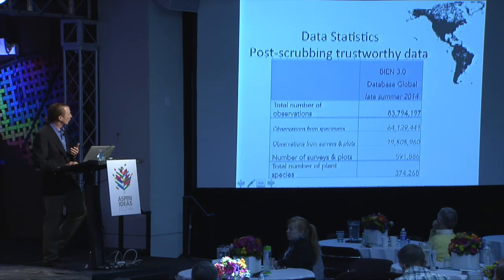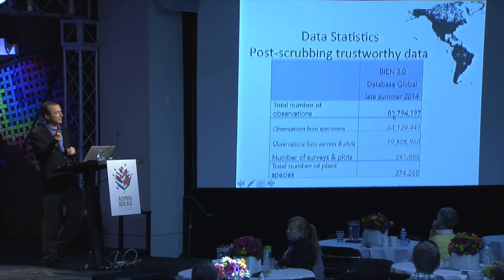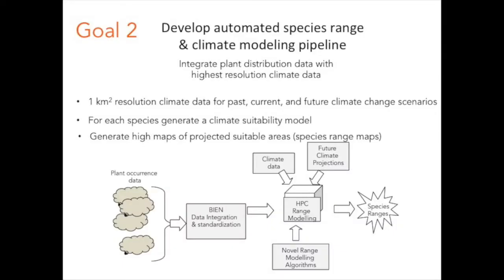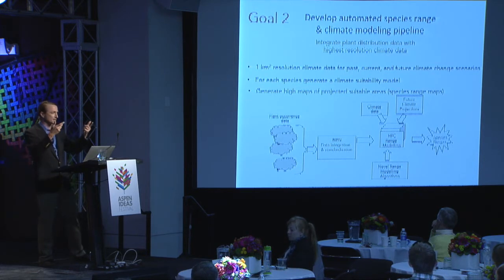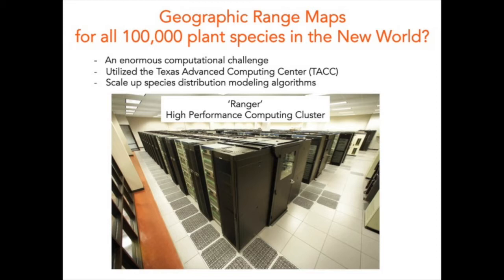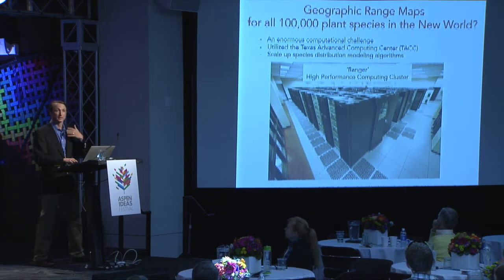As of right now, we've been able to put together and standardize over 89 million observation records — 89 million observations where somebody has seen a plant or a tree and recorded it at some geographic location. Once we put together this enormous amount of data, we can do some pretty high-powered science with it. The second goal is to utilize the world's botanical data to develop an automated species range and climate modeling pipeline. Once we know where species tend to occur and the local climate conditions, we can start forecasting what the impacts of different climate change scenarios will be. It's quite difficult computationally — straightforward for maybe 50 species, but when you're talking about 100,000 or potentially 400,000 to 500,000 species globally, we have to put this in a high-performance computing environment, working with the University of Texas Advanced Computing Center.